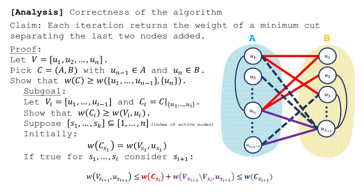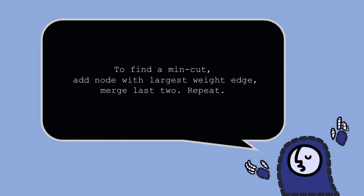Don't worry if it doesn't all make sense right now. If you go through the proof again slowly today and once more in a week, it should make more sense — the brain has a strange way of making connections even when we're not paying attention. I'll leave you with a haiku summarizing everything: 'To find a min cut — add node with largest weight edge — merge last two, repeat.'